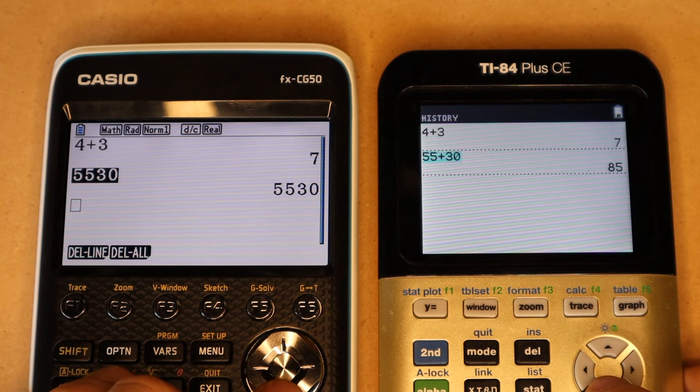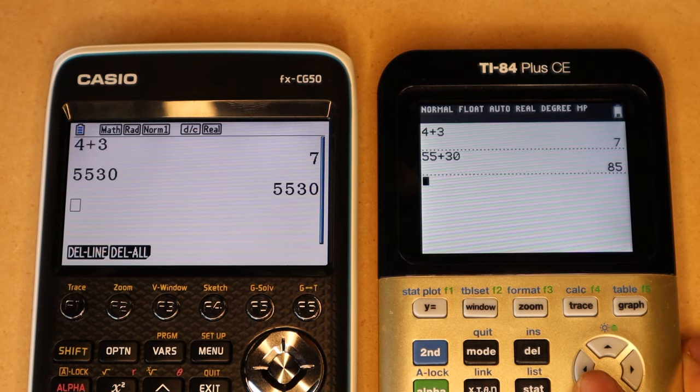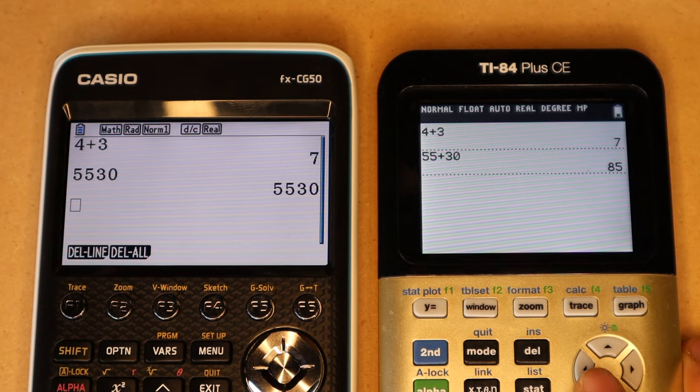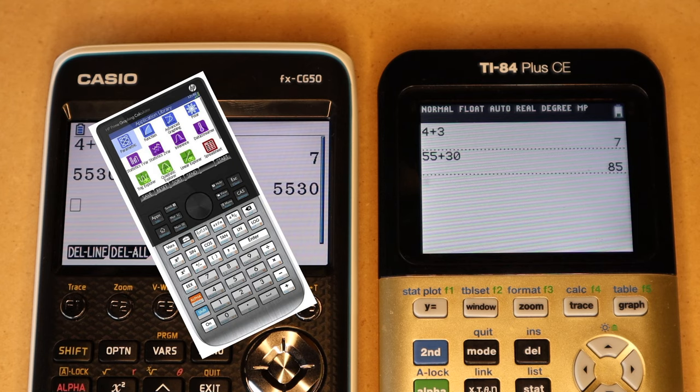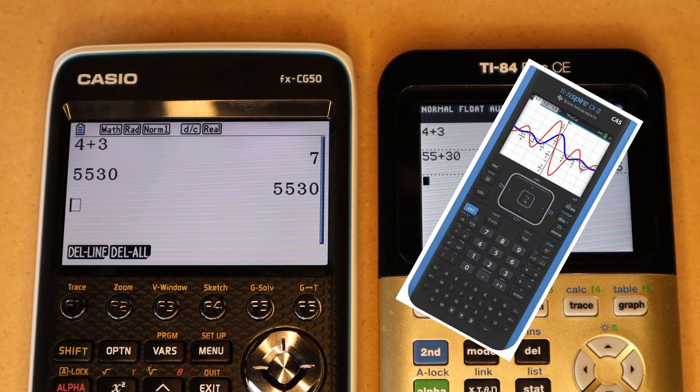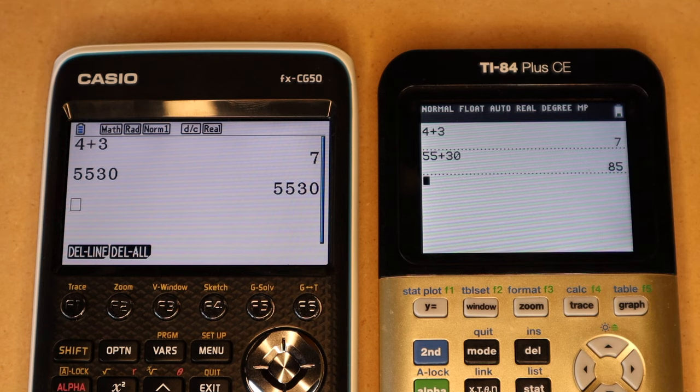So one big thing about each of these calculators to keep in mind is that neither of them has a CAS or computer algebra system. So this means that you won't be able to perform most operations involving letter variables and solving equations that don't have plain numeric answers. So if you want to do things like that, you'll have to look at a different calculator like the HP Prime or the TI-Inspire CX CAS. But what that does mean is that each of these are going to be allowed on almost every standard test.